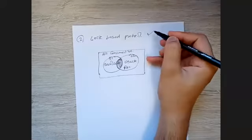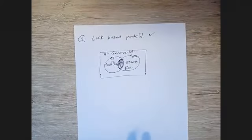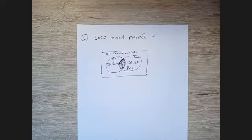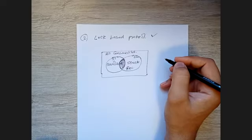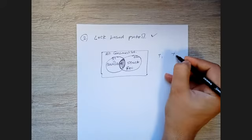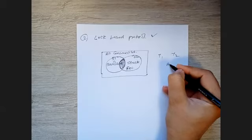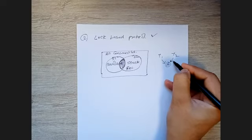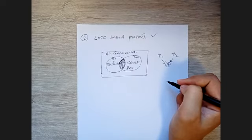Before the locking protocol, recall why we needed the timestamp-based protocol. For any schedule, we assign a timestamp to every transaction when it enters the system. The reason is the conflicts that occur during concurrent execution. We are familiar with the three conflict possibilities: read-write, write-write, and write-read. If two transactions T1 and T2 want to perform operations on data item A, the problem is not that they access the same item, but that they want to do so at the same point in time.